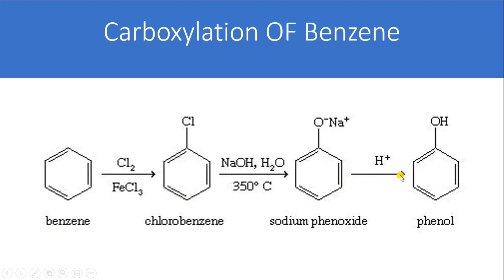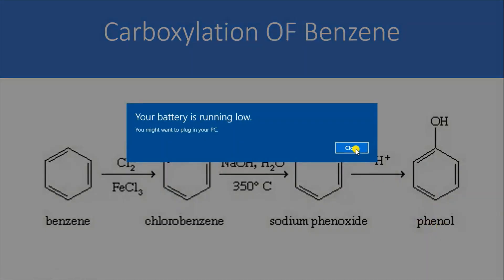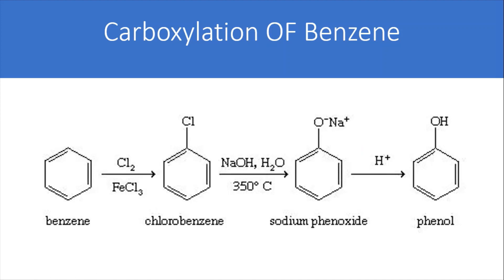To produce phenol from benzene: there is no single direct route, but the common approach is to start with chlorobenzene. Benzene is subjected to chlorination in the presence of a Lewis acid to give chlorobenzene. This chlorobenzene is then treated with a strong base like NaOH at around 350°C to give the salt sodium phenoxide. Sodium phenoxide can then be hydrolyzed with acid to give phenol.